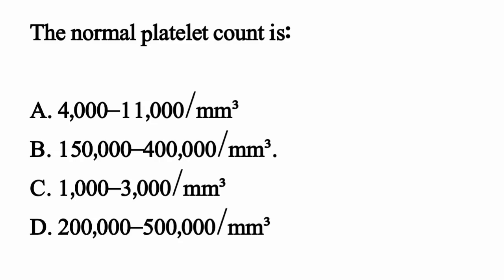The normal platelet count is — the correct option is Option B, 150,000 to 400,000 per mm³.